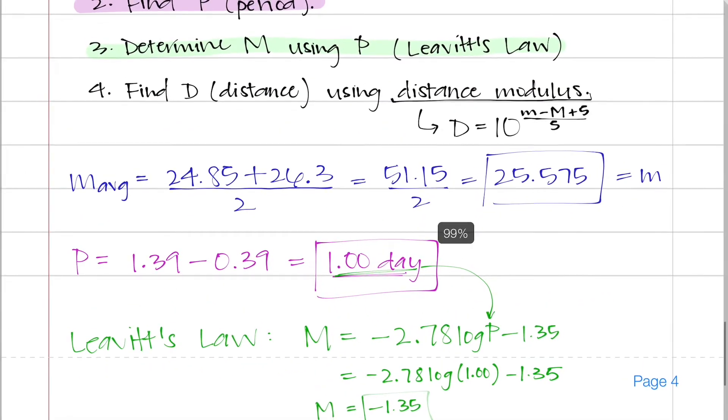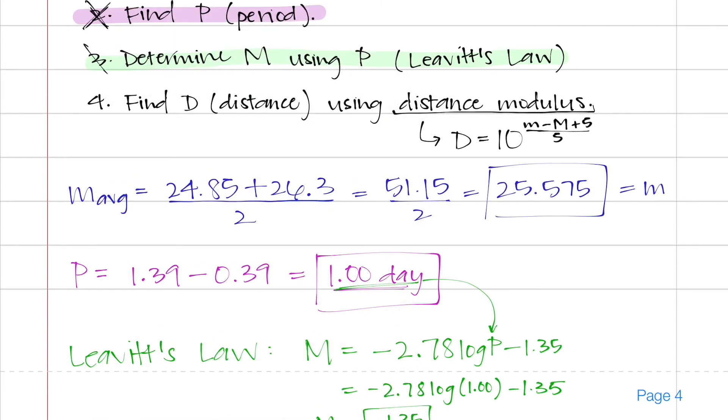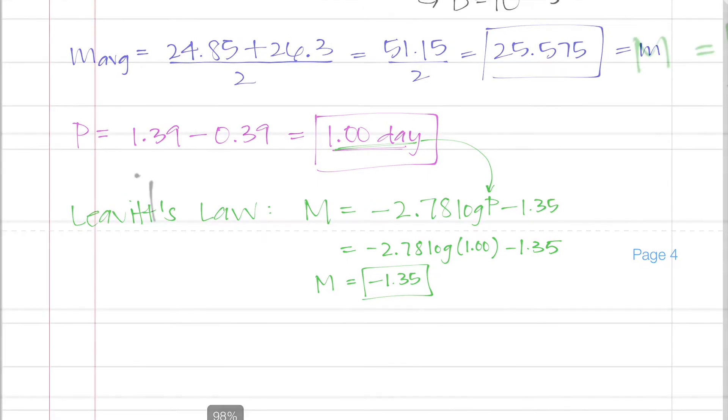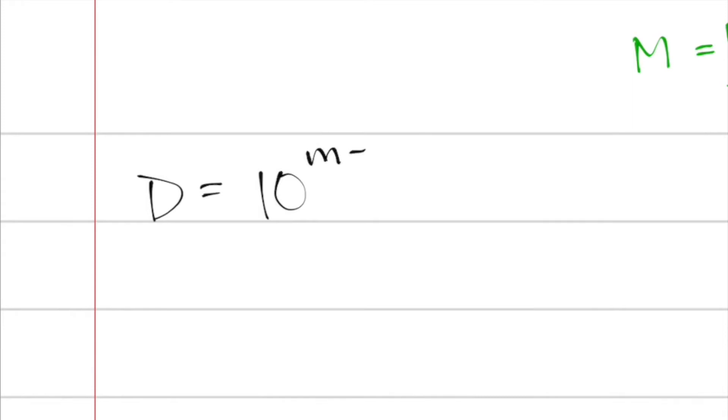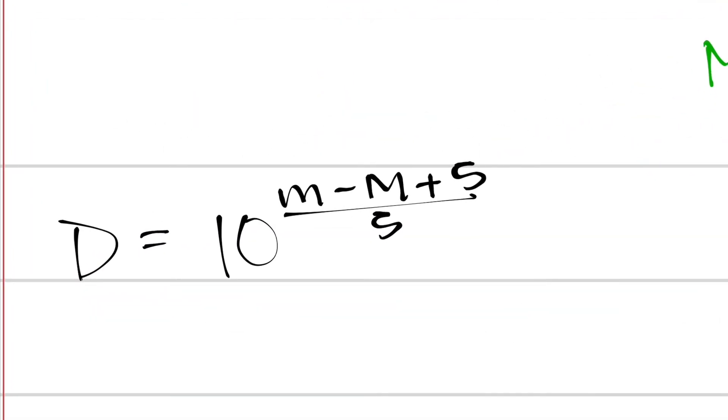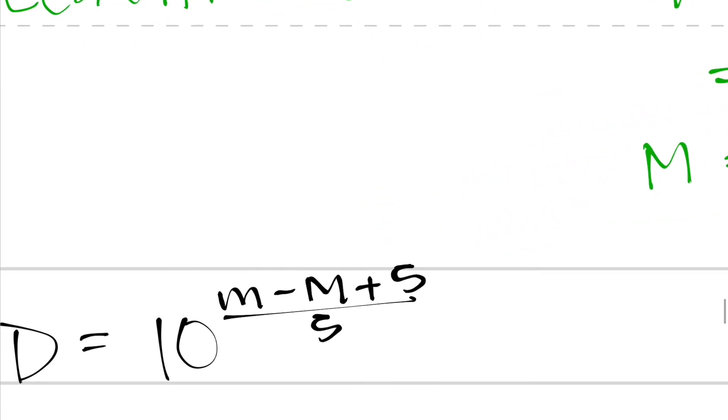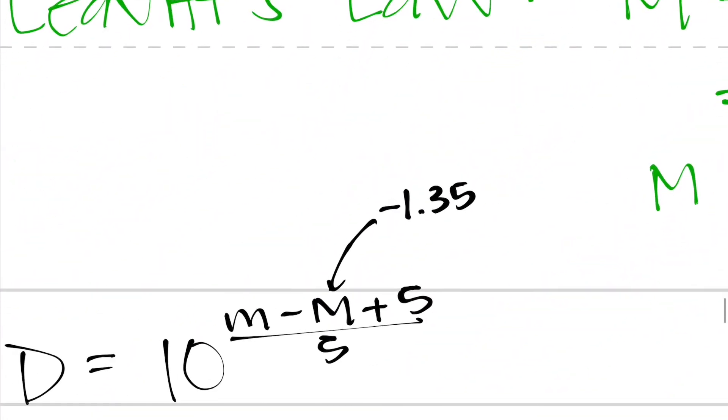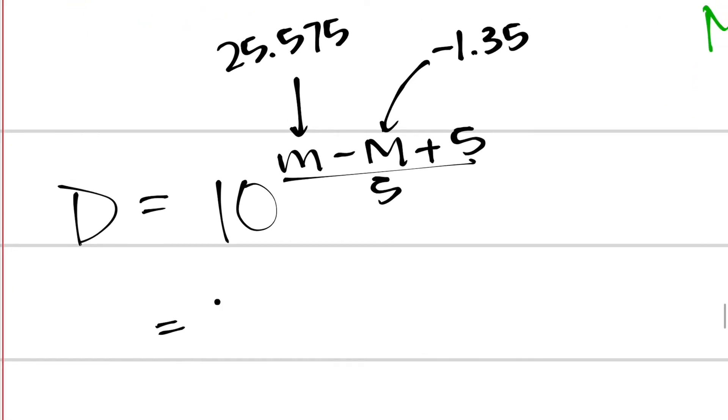So going back to our checklist, we've now also completed steps 2 and 3, which means we're down to the last step, which is to find the actual distance using the distance modulus. So the distance modulus capital D is equal to 10 to the power of apparent minus absolute magnitude plus 5, all over 5. So I know my absolute magnitude is negative 1.35, and from the very first step, I had 25.575 as my apparent magnitude. So plugging in those numbers, we get 10 to the power of 25.575 minus negative 1.35 plus 5, all over 5.